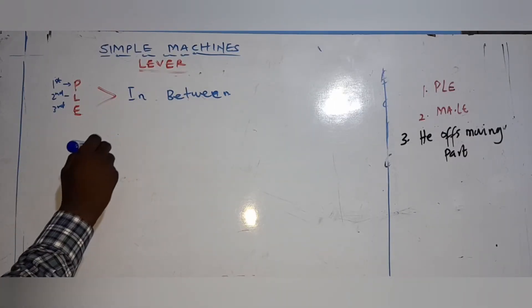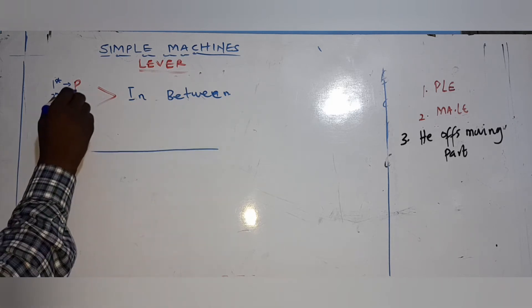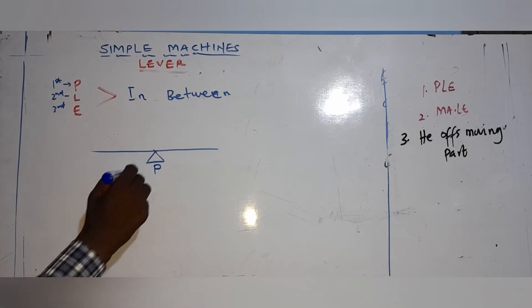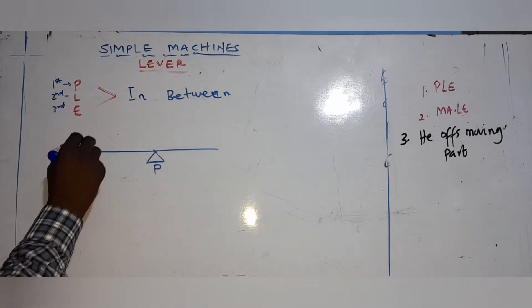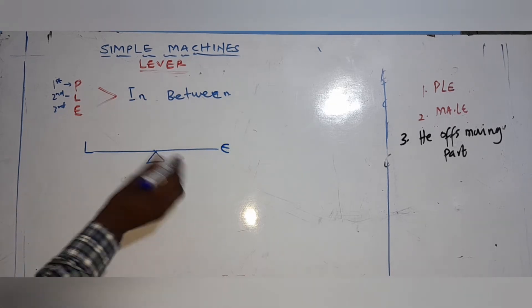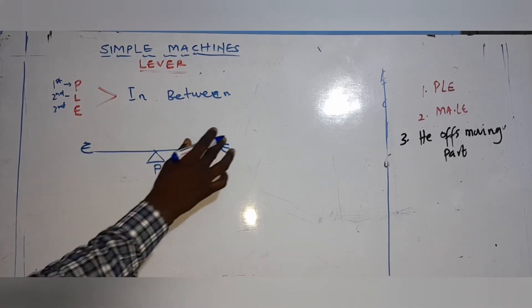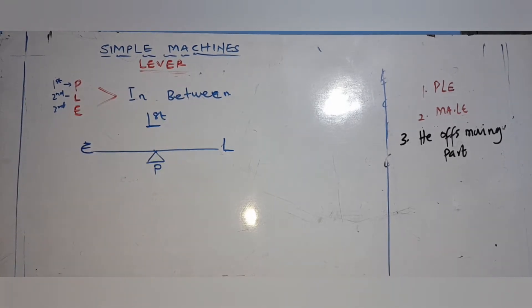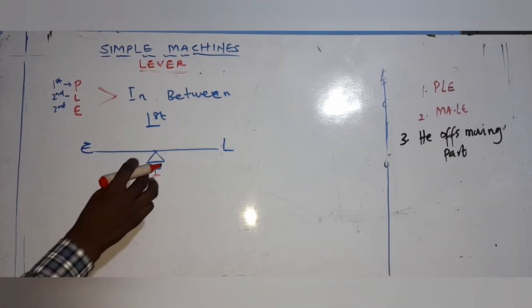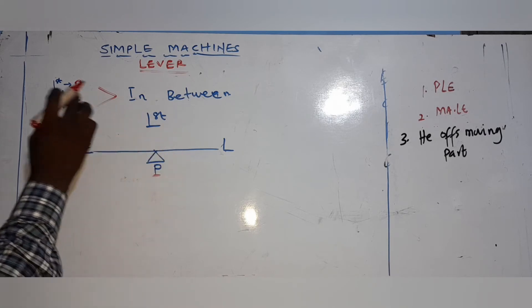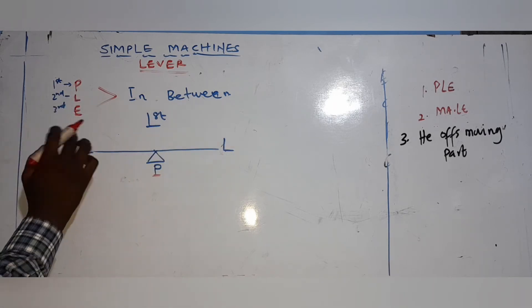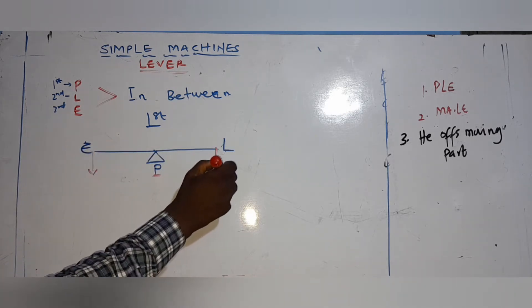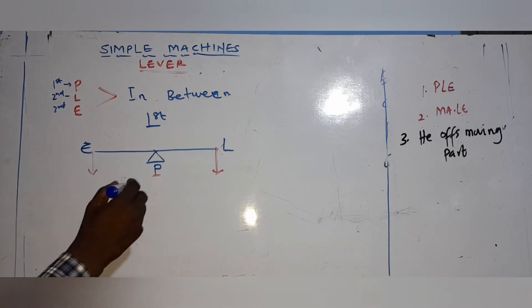For a first class lever: if the pivot (P) is in the middle, it becomes first class. You can put the load on one side and the effort on the other — it is still first class. So whenever the pivot is in the middle, no matter where the load and effort are placed, it is a first class lever.